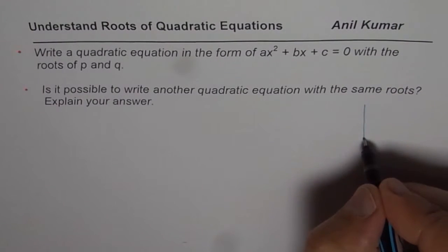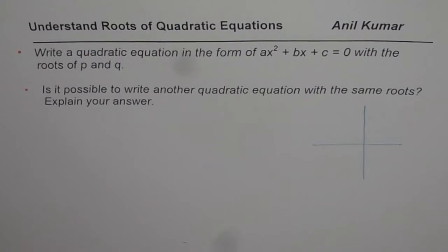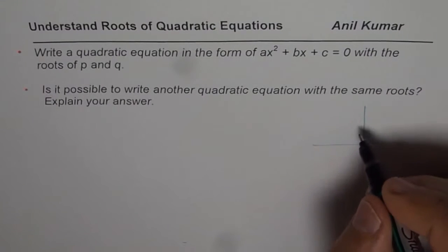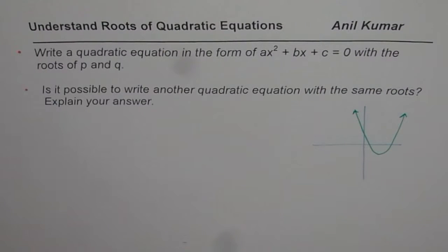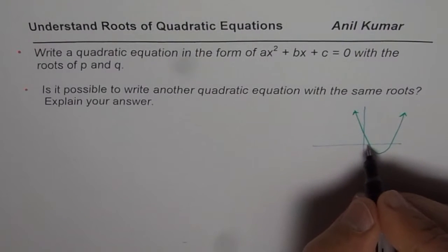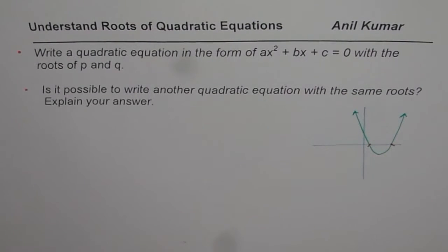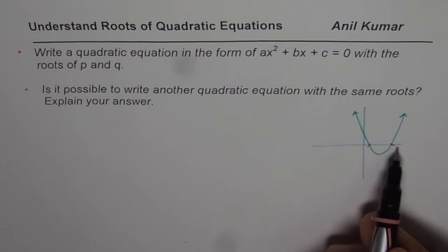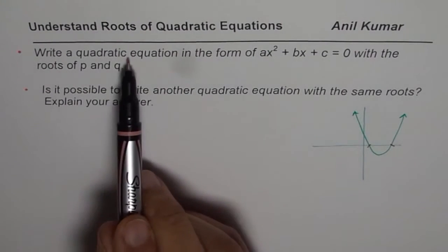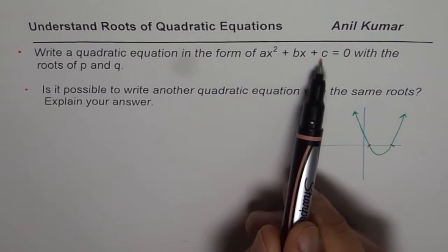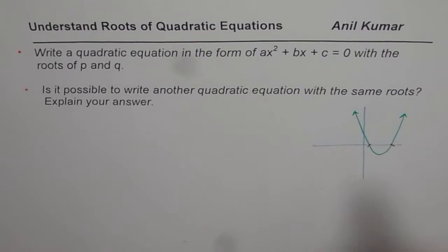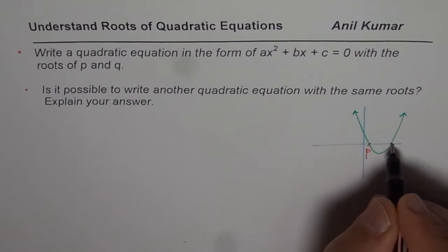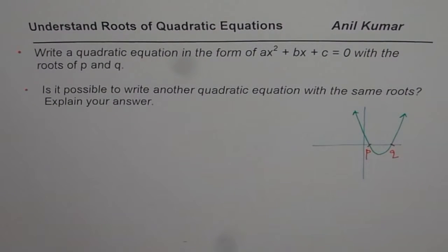Let us first understand the concept. Let us say this is our coordinate plane and we will just sketch a parabola. So what are the roots? When we say roots, that means x-intercepts or the zeros. We will consider roots as the x-intercepts. Now when you say write a quadratic equation in the form of Ax² + Bx + C — that is standard form — equals to 0 with roots at P and Q. So that means the x value is P or Q. These are the two roots.